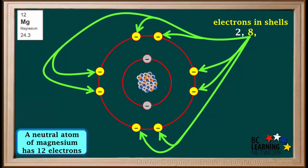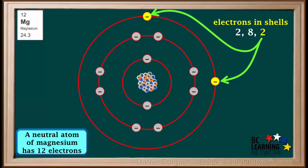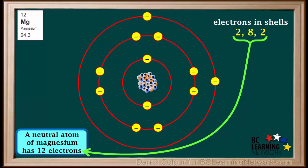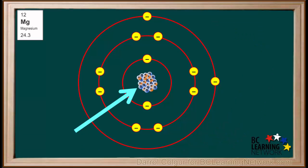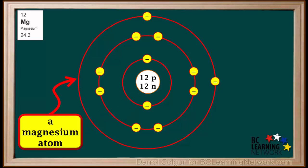So that's 2 plus 8, which is a total of 10 so far, and magnesium has 12 electrons. So the third shell of a magnesium atom has 2 electrons. This accounts for 2 plus 8 plus 2, which equals all 12 electrons in a magnesium atom. The nucleus has 12 protons and 12 neutrons, which is usually simplified by showing a circle with 12p and 12n.